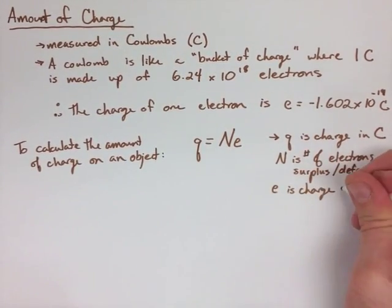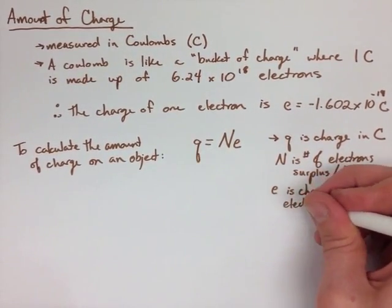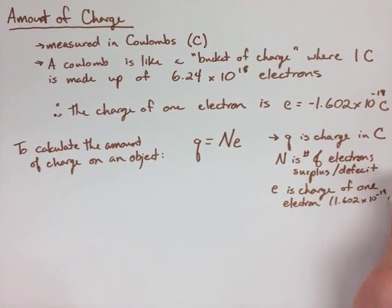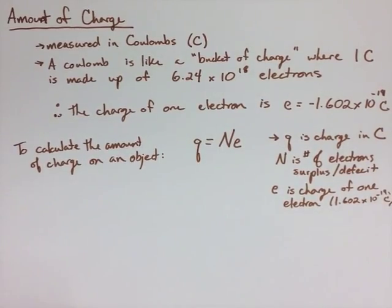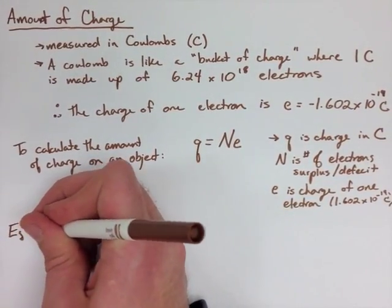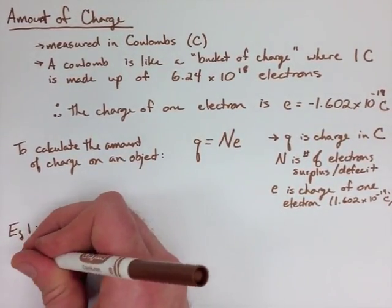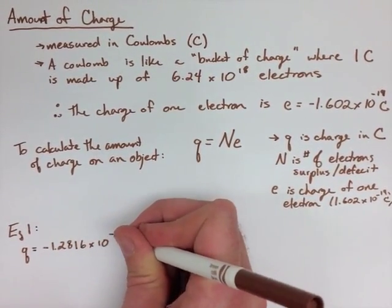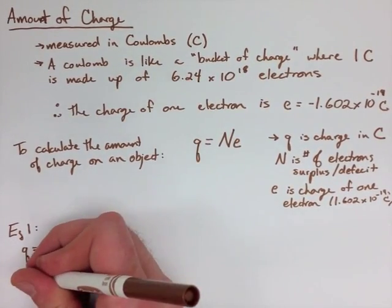When we're looking at the first example, we're trying to find out how many extra electrons this charged balloon has. We know the charge of the balloon is negative 1.2816 times 10 to the negative 18 Coulombs. We know the charge of an electron is negative 1.602 times 10 to the negative 19.